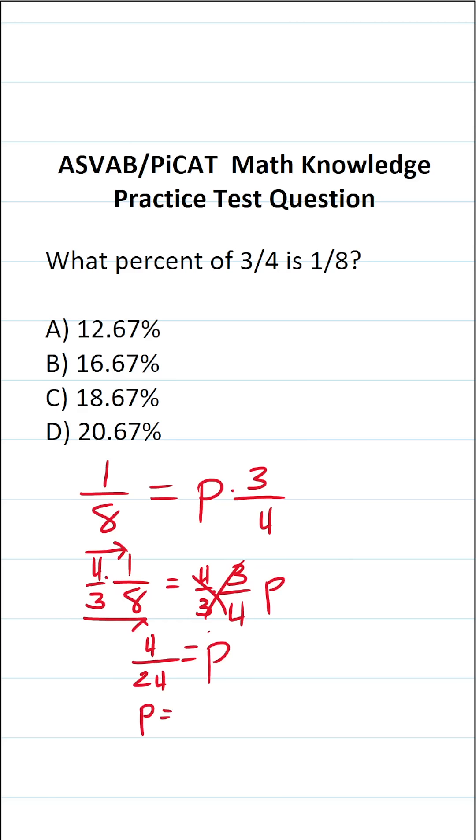So P, in other words, is going to be four over twenty-four, which we can reduce by a common factor of four to make this one. Four divided by four is one. Twenty-four divided by four is six. So one-eighth is one-sixth of three-fourths,